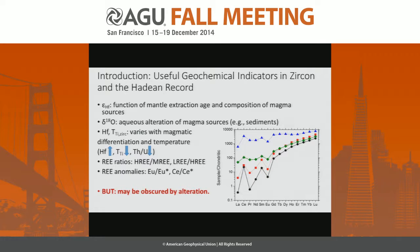There are many useful geochemical systems in zircon that have been exploited to give us information about the early Earth. We've heard about the lutetium-hafnium system and oxygen isotopes, and there are also many trace elements that provide useful information about the magmatic context of the zircons. I'm going to be focusing on trace elements in this talk today.